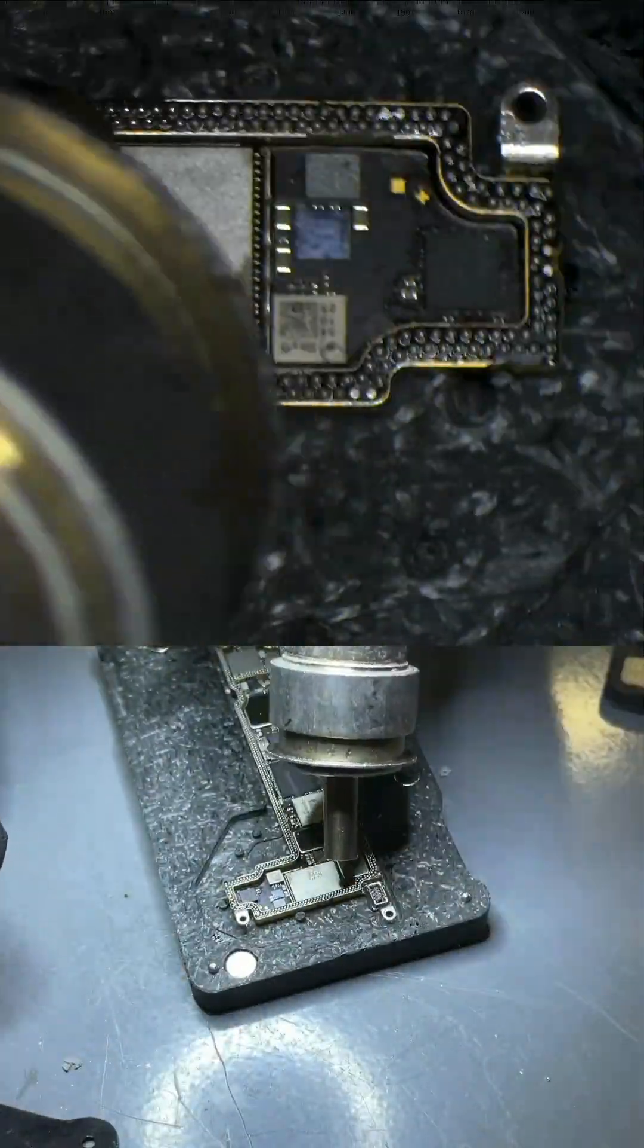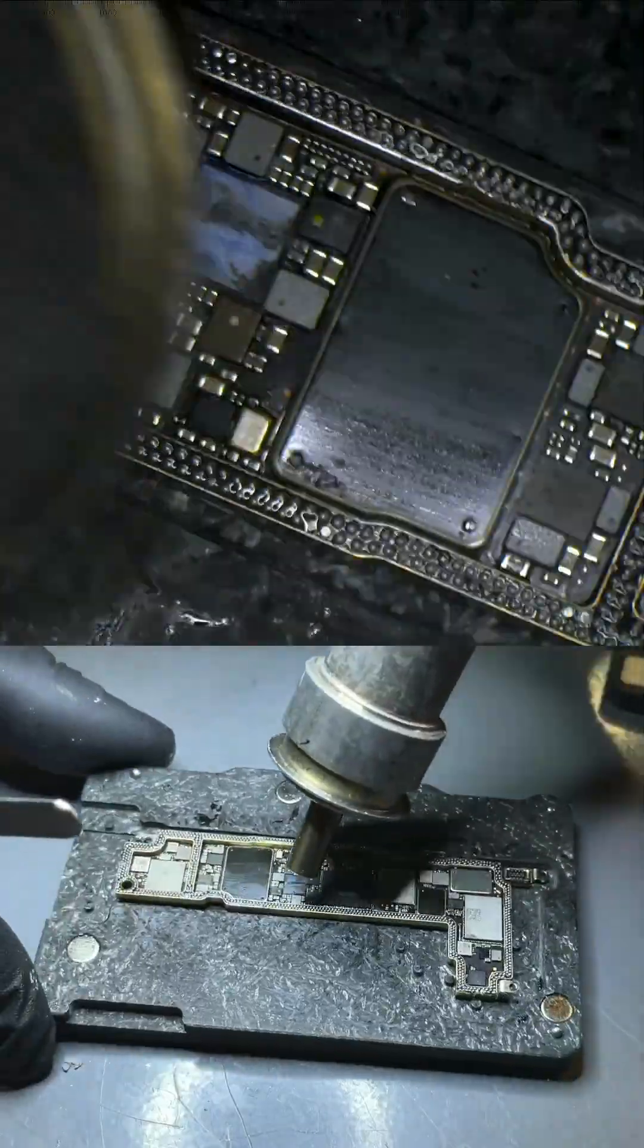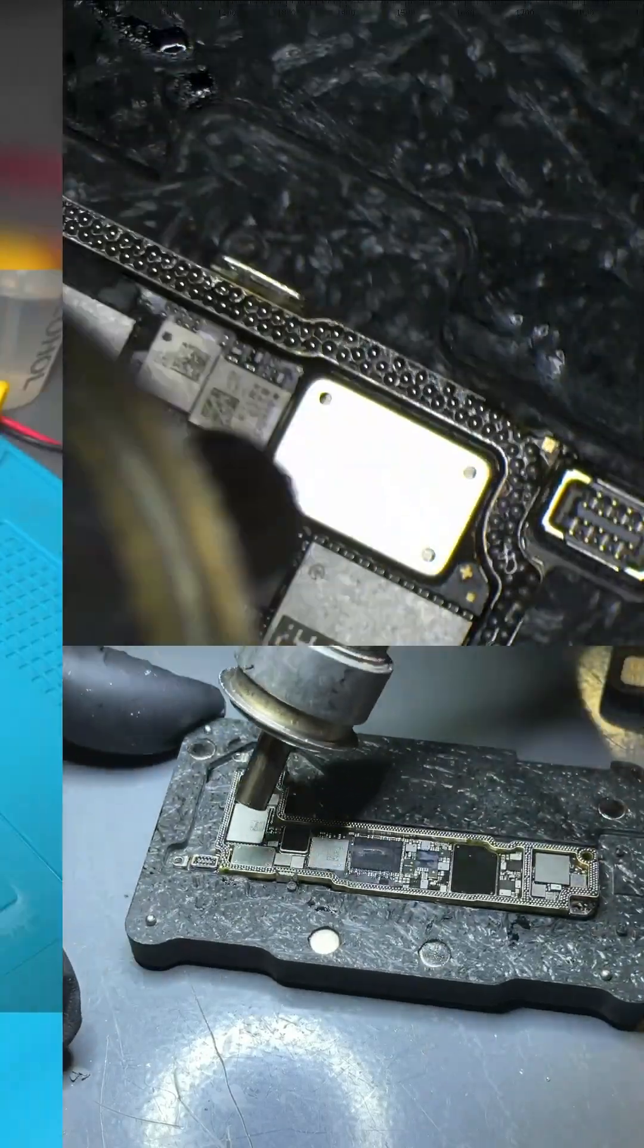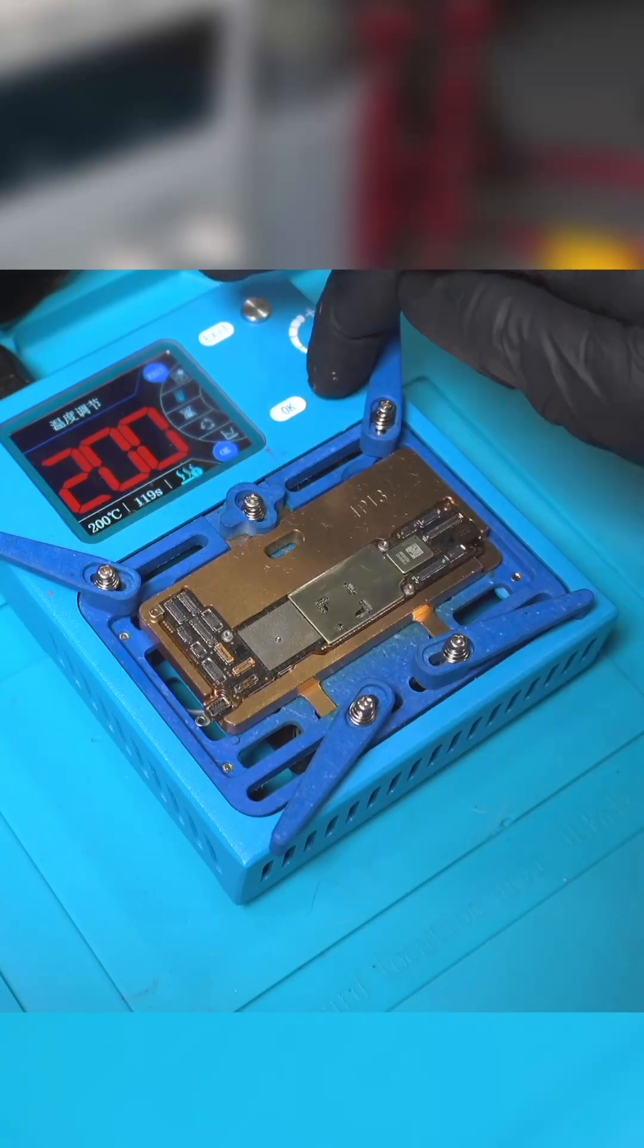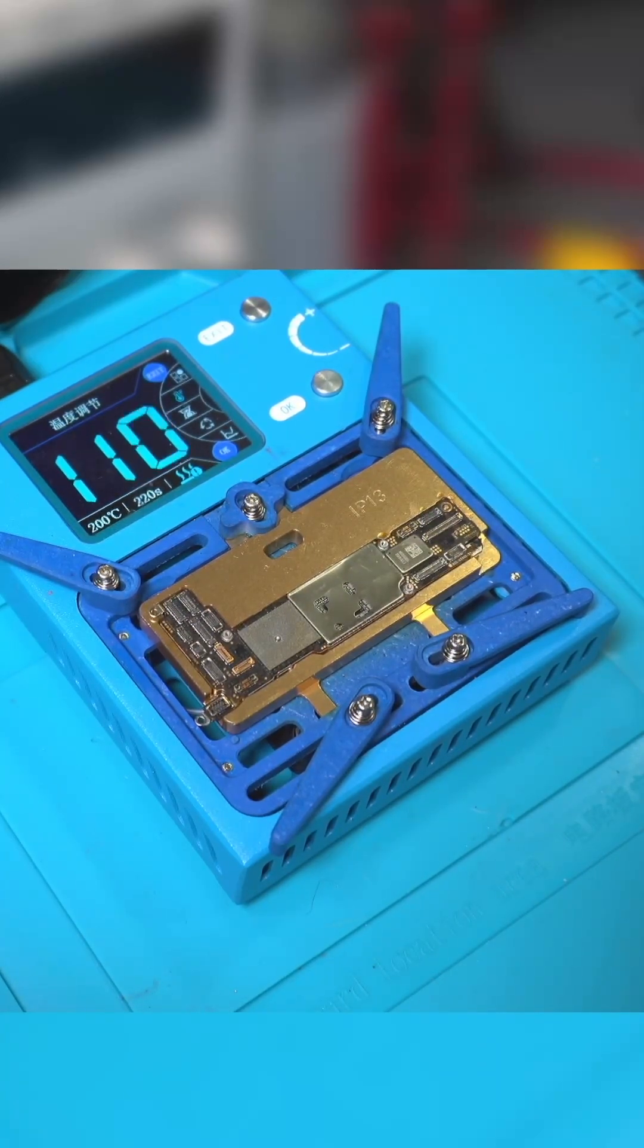With the heat gun, we make sure the solder balls are correctly shaped, and we make sure to go around the perimeter. We add flux and install the upper motherboard onto the lower motherboard on the pre-heater at 200 degrees Celsius for about 3.5 minutes.